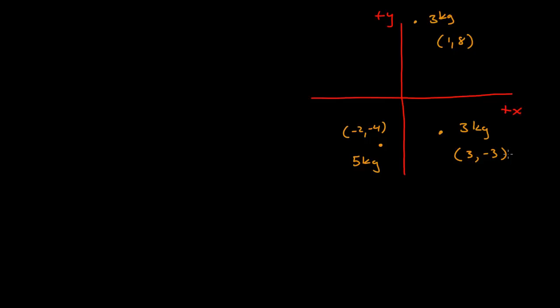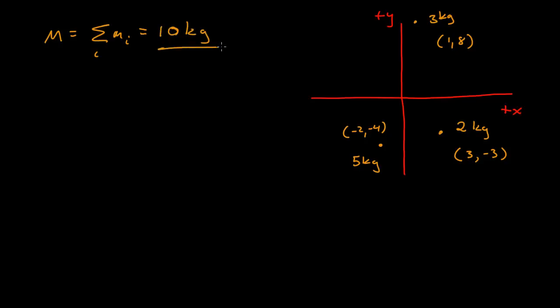Let's calculate the mass, center of mass, and moment of inertia. The total mass is the sum over all masses: 5 plus 3 plus 2 is 10 kilograms.